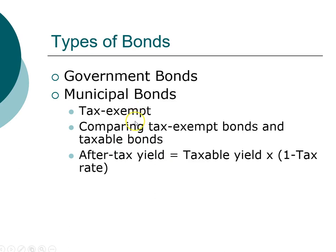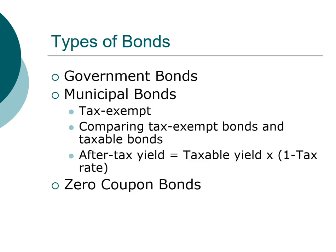By giving municipal bonds tax-exempt status, the government is helping local authorities. When comparing a taxable bond and a tax-exempt bond, you want to compare their after-tax yield. The after-tax yield equals the before-tax yield times one minus the tax rate. For example, if a corporate bond has a yield of 10% and you pay 30% in tax, you only take home 7%. A tax-exempt bond offering 7% would be competitive, so a corporate bond must offer a higher return to compete with municipal bonds.